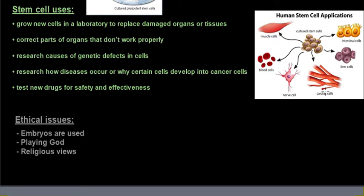Stem cells are used to grow new cells in a laboratory to replace damaged organs or tissues — for example, cardiac cells, intestinal cells, liver cells if there's liver damage, nerve cells, muscle cells, and blood cells. They're also used to correct parts of an organ that don't work properly, research causes of genetic defects in cells, research how diseases occur or why certain cells develop into cancer cells, and test new drugs for safety and effectiveness.